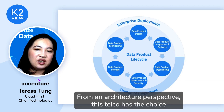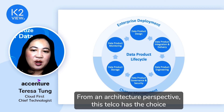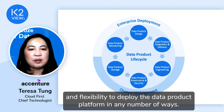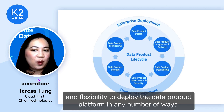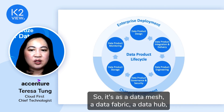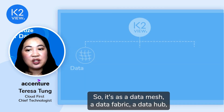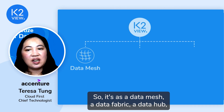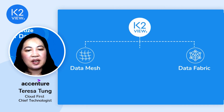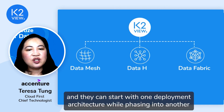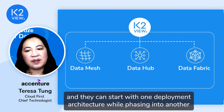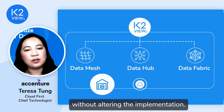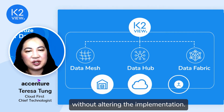From an architecture perspective, this telco has the choice and flexibility to deploy the data product platform in any number of ways — as a data mesh, a data fabric, or a data hub. They can start with one deployment architecture while phasing into another without altering the implementation.